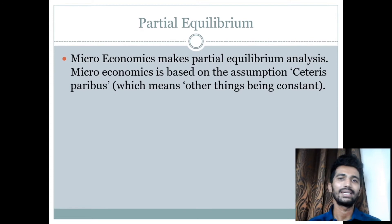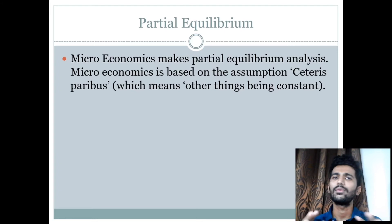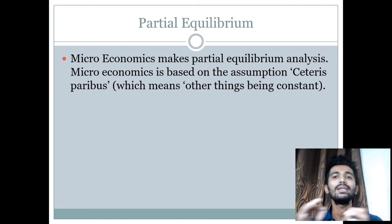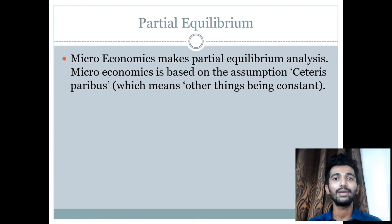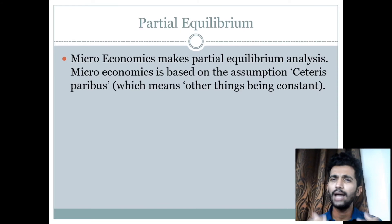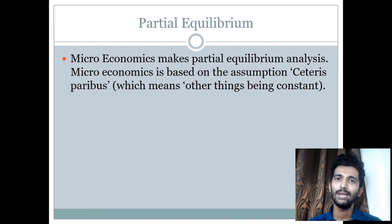Moving further, the next point is partial equilibrium. Equilibrium here means a measuring tool which helps you in balancing or understanding the allocated resources in the economy properly. Macroeconomic study uses general equilibrium analysis where everything is generalized, but in microeconomics partial equilibrium analysis is used. Microeconomics makes partial equilibrium analysis and thus is based on the assumption of ceteris paribus, which means other things being constant. As we move further in this chapter, we will study many laws of economics which will help us in understanding these constant factors.